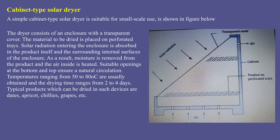A simple cabinet type solar dryer, suitable for small-scale use, is shown in the diagram. The dryer consists of an enclosed enclosure with a transparent cover. The material to be dried is placed on perforated trays. Solar radiation entering the enclosure is absorbed by the product itself and the surrounding internal surfaces of the enclosure. As a result, moisture is removed from the product and the air inside is heated. Suitable openings at the bottom and top ensure natural circulation. Temperatures ranging from 50°C to 80°C are usually obtained and the drying time ranges from two to four days. Typical products include dates, apricots, chilies, and grapes.